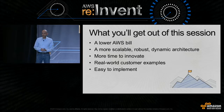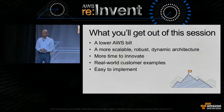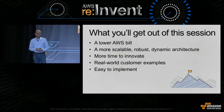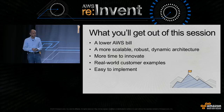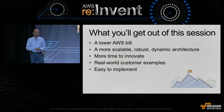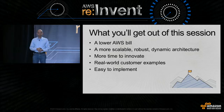What you're going to get out of this session is, of course, a lower AWS bill. My personal goal is that each and every one of you should be able to lower your bill by at least 10% as a result of this talk. You're also going to see ways to get a more scalable, robust, and dynamic architecture, and some strategies will help you spend more time innovating. We'll see real-life customer examples, and most of these things are pretty easy to implement — you can start saving money right away.